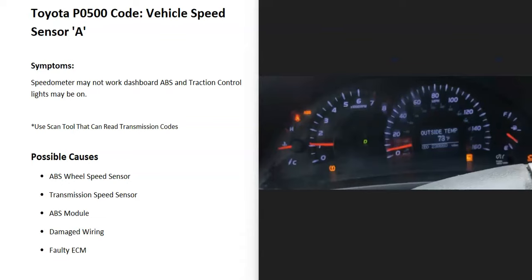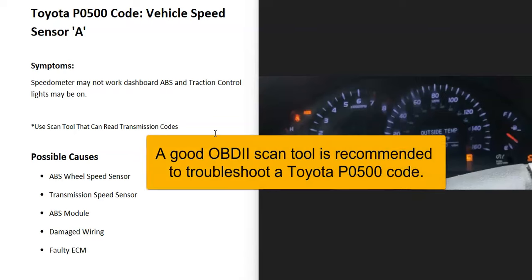Some common symptoms when this code comes up: the ABS lights might come on, traction control lights might come on, and the speedometer may or may not work. This code can be problematic to troubleshoot, especially if you don't have a good OBD2 scan tool. If you just have a low-cost scan tool, it might not be reading all the codes, mainly the transmission codes.